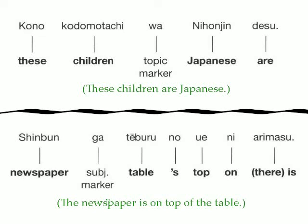I just want to quickly go over the possessive. The word for possession in Japanese is no. In this case, it marks that something is on top of the table, or belonging on top of the table.